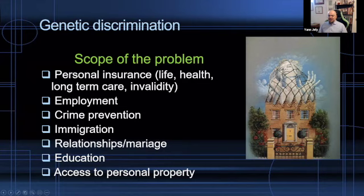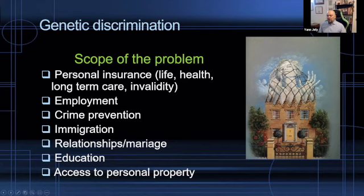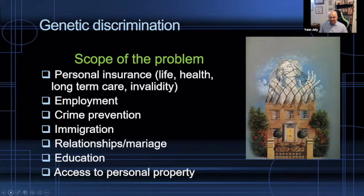Surprisingly, there have been high-profile and quite worrying cases involving how genetic tests have been used in the context of immigration. In Asia, genetic information and test results are also quite important in the context of relationships and marriage, given the importance of family and children in many Asian cultures — especially for women, there are many health-related questions before marriage, including genetics. Access to personal property is also a field where discrimination has been seen. These are occurrences — I'm not saying it is widespread.